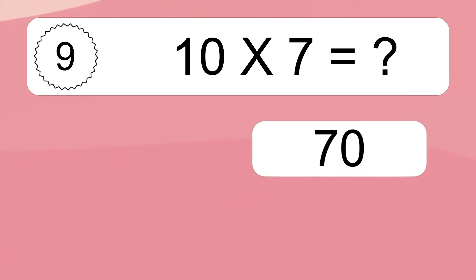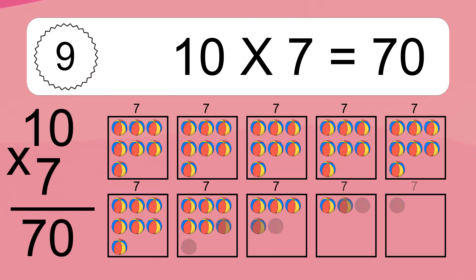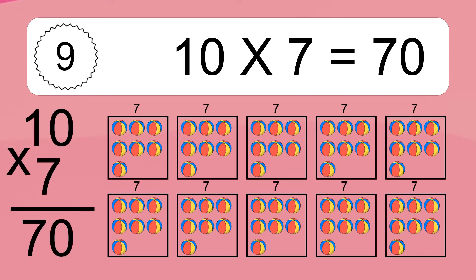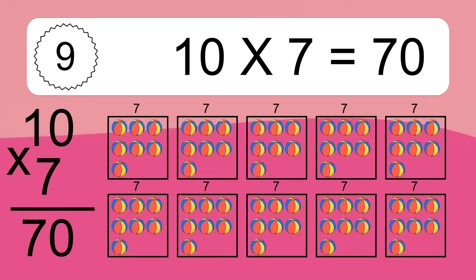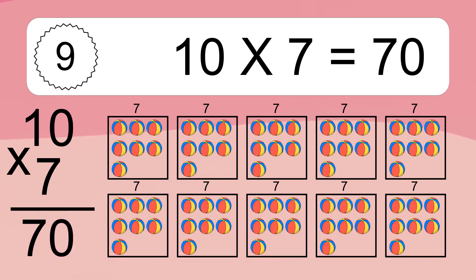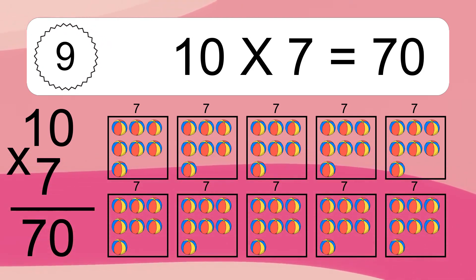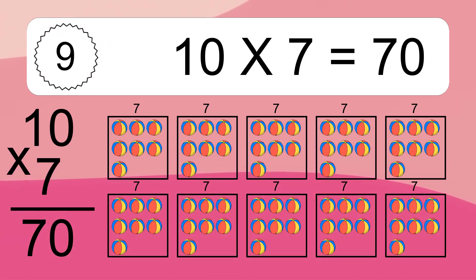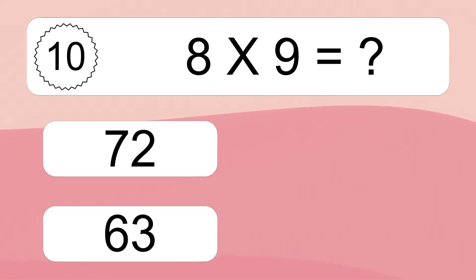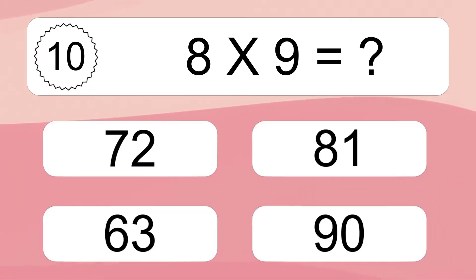10 times 7 equals what? 10 times 7 equals 70. We have 10 boxes, and each box has 7 colorful balls inside. If you count all the balls in all the boxes together, you will have 10 times 7 balls. This equals 70 balls.